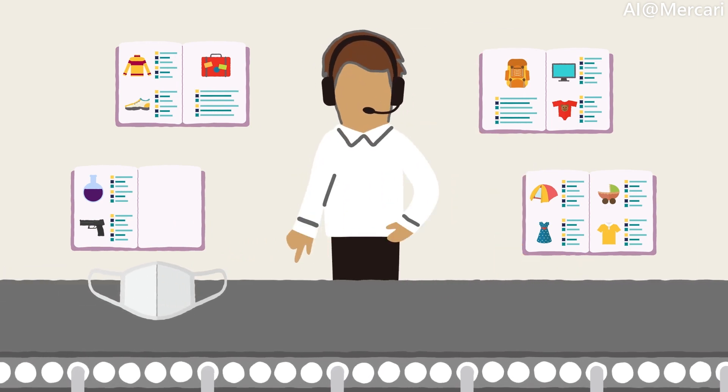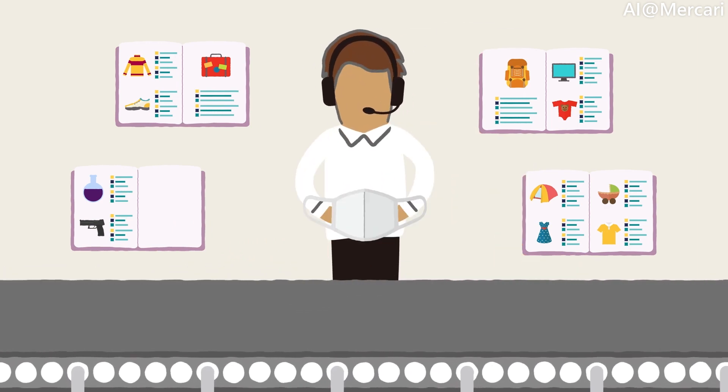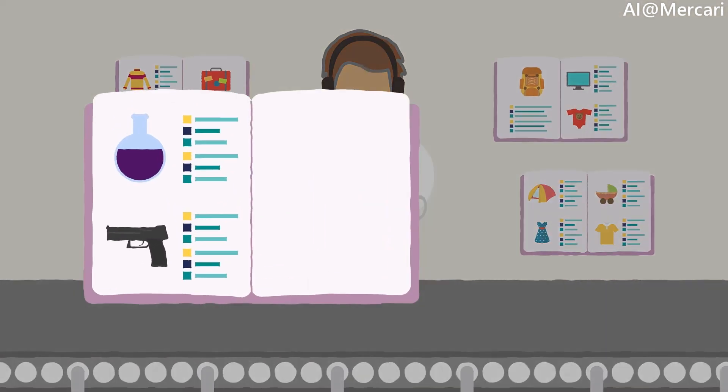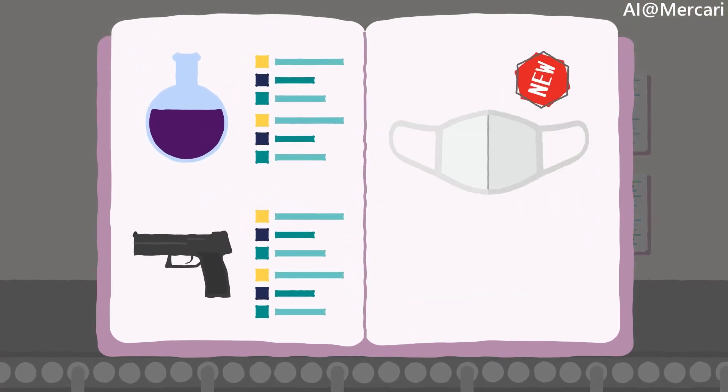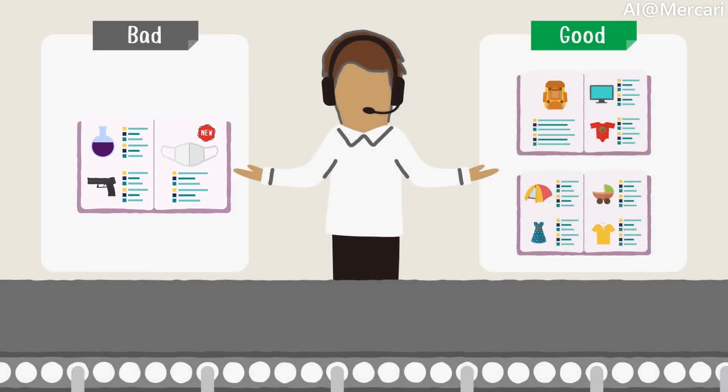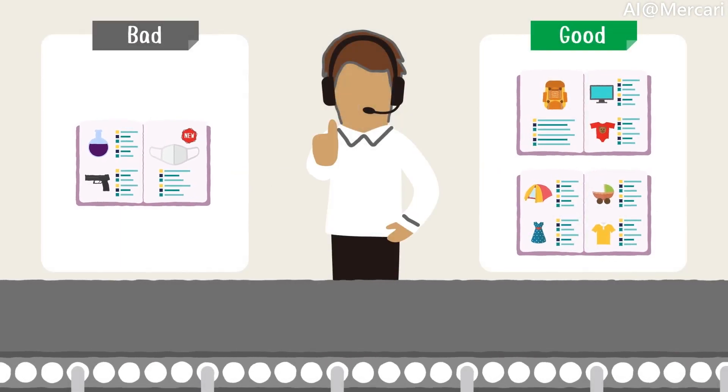For example, before the pandemic, nobody really thought about banning masks, but CS needed to quickly adjust their templates to ban them because they were either defective or too expensive. These templates may be removed once regulations or trends change. These changes may cause quality issues from a machine learning point of view and might dramatically affect the model performance.